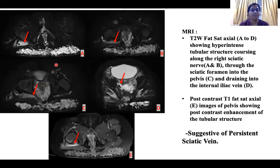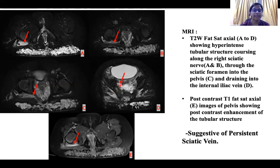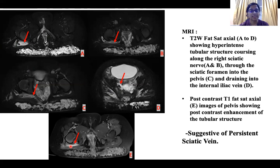In the next slide, axial images of the pelvis show a tubular hyperintense structure along the course of the right sciatic nerve, seen passing through the intermuscular plane and through the sciatic foramen. It is seen entering the pelvis and then draining into the right internal iliac vein. Post-contrast enhancement of the tubular structure was also observed. These features were suggestive of a persistent sciatic vein.